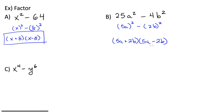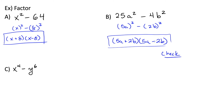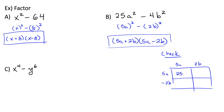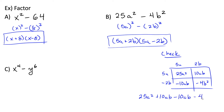If you aren't sure about whether this is the right answer, you can always check by multiplying out. 5a times 5a gives 25a squared; 5a times 2b gives 10ab; 5a times negative 2b gives negative 10ab; negative 2b times positive 2b gives negative 4b squared. Then we have 25a squared plus 10ab minus 10ab minus 4b squared. The middle terms cancel and we're left with 25a squared minus 4b squared.